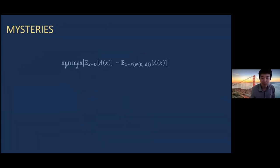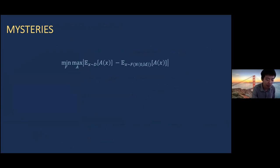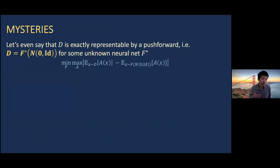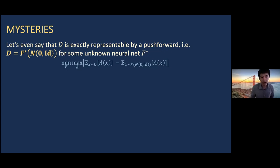There are a number of theoretical mysteries underlying not only this particular approach to distribution learning, but even the more general question of whether distribution learning is possible under any algorithm. In this talk, we'll simplify by assuming any real-world distribution is exactly representable by a push forward — I'm not going to worry about approximability. I'll assume there is some unknown neural network f-star for which the true distribution is given by f-star of Gaussian, and my goal is to recover f-star either in a parameter sense or a distributional sense.